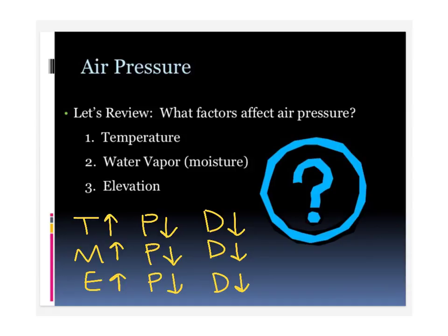If you do the opposite and lower temperature, moisture, and elevation, pressure and density will increase because of that indirect relationship between those factors and pressure.